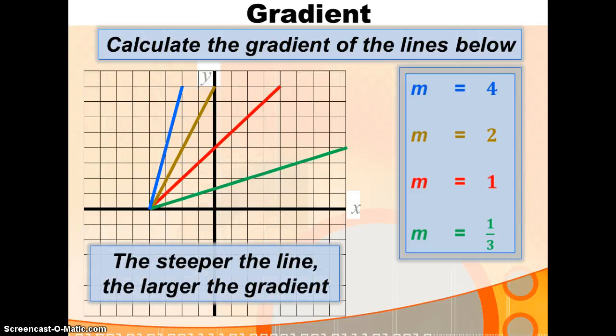Now, you should see there that the lines with the larger gradients are those which are steepest. We see there the blue line is the steepest line, and this is the line which has the highest or the largest gradient. The green line is the line which is least steep, and this is the line which has the smallest gradient. So, the steeper the line, the larger the gradient. The gradient is a measure of steepness.